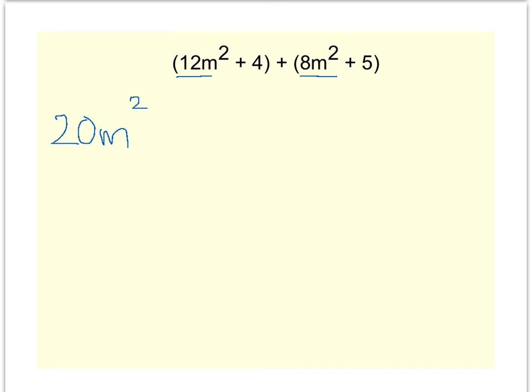And then you have a plus 4 and a plus 5, two constants that when you add them together, you get a plus 9. This answer is in standard form because when you look at it from left to right, the exponents start at their biggest and end with the constant.